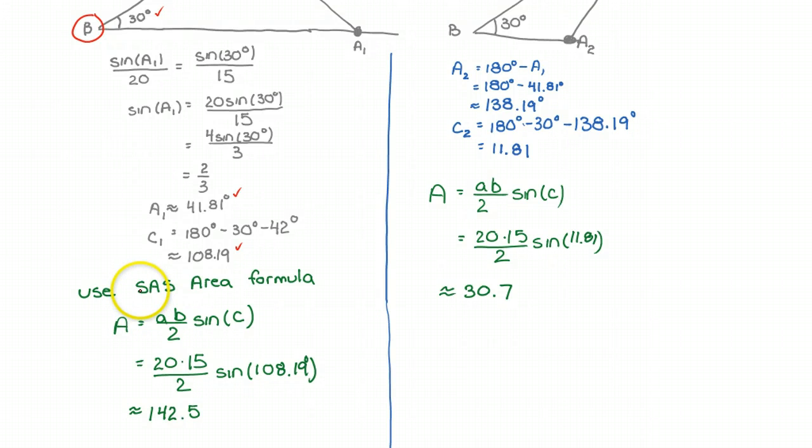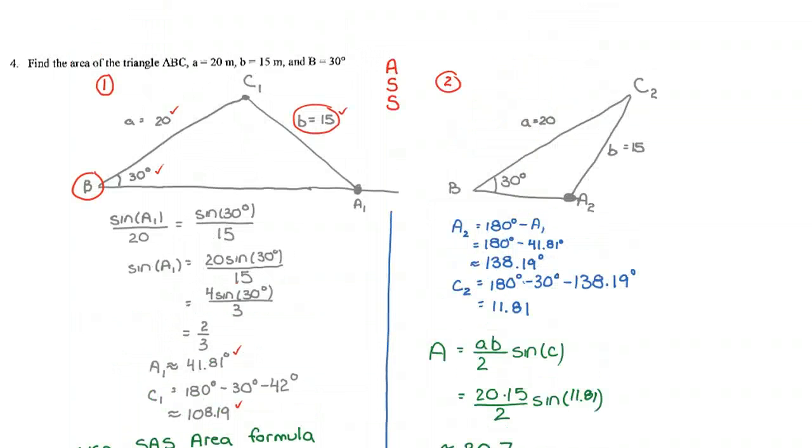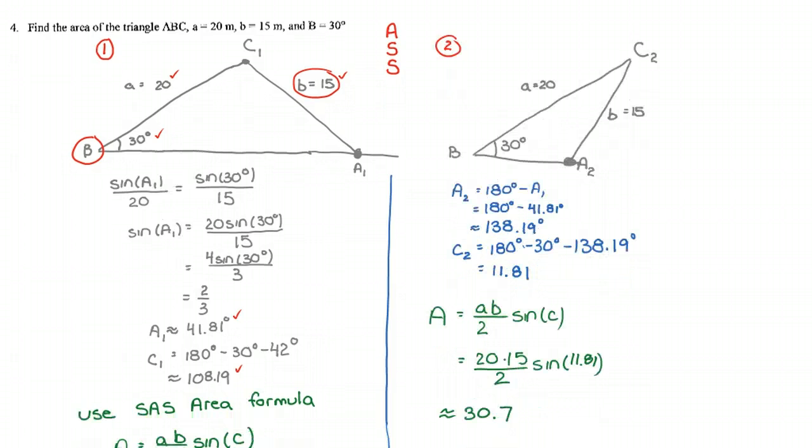But there's one that I like which can be used in a side angle side situation. So, since I have length A, angle C1, and length B, I can use this form.